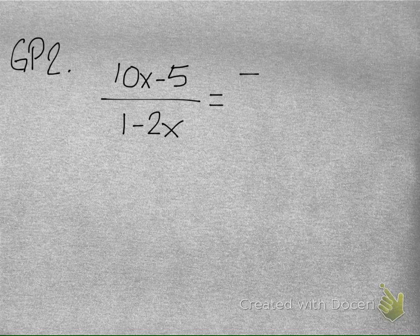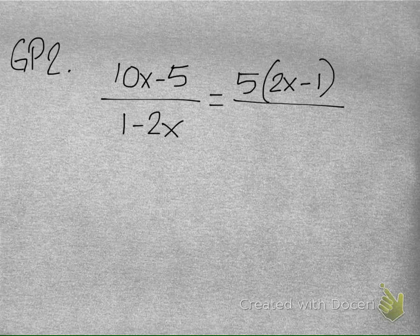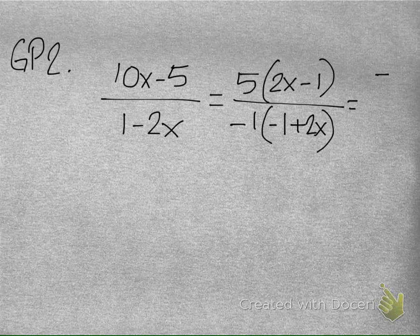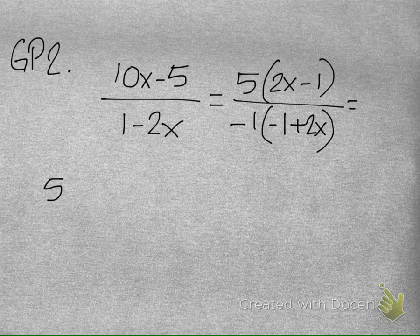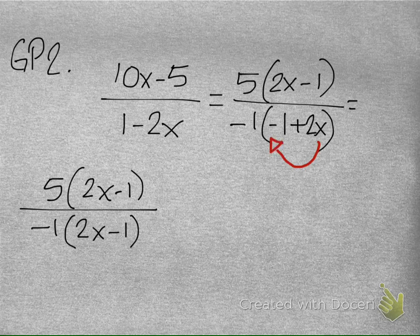Proceeding with this, I have 10x minus 5. I know I could definitely factor out a 5, which gives me 2x minus 1 for my numerator. Looking at my denominator, I have 1 minus 2x, and we talked about that minus sign in this class. If we take out a negative 1, that gives us negative 1 plus 2x, which is the same thing as negative 1 times 2x minus 1. You'll notice we did a switcheroo here.